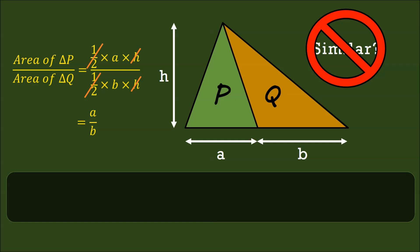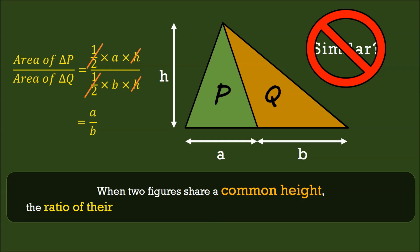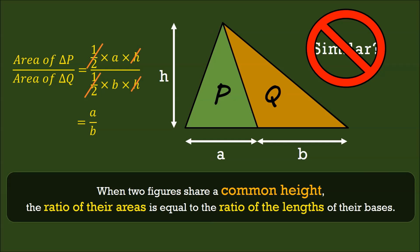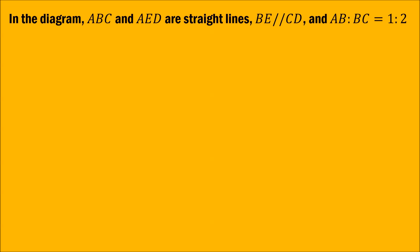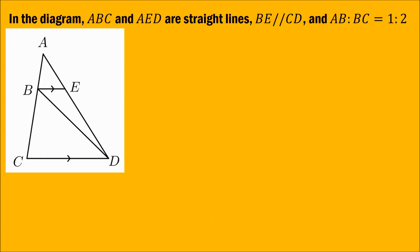So what we learn from here is that when two figures share a common height, the ratio of the areas is equal to the ratio of the lengths of the bases. Let us take a look at this example. In the diagram, ABC and AED are straight lines.